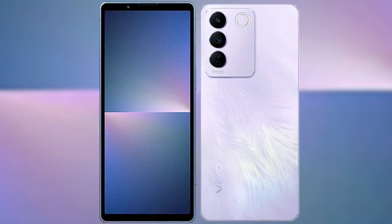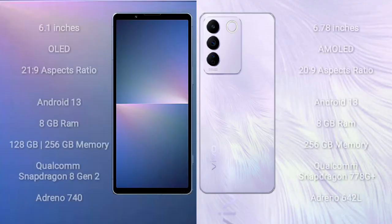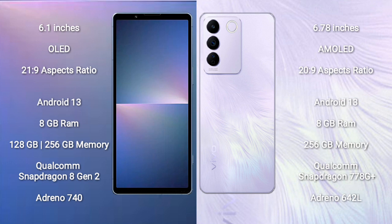I will compare the new Sony Xperia 5 Mark 5 with VOV29. Sony Xperia 5 Mark 5 comes with a 6.1 inches OLED display and aspect ratio 21x9. VOV29 comes with a 6.78 inches AMOLED display and aspect ratio 20x9.